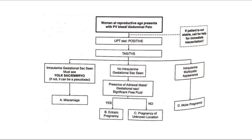If there is an intrauterine gestational sac, we need to rule out the different types of miscarriage. If there is no intrauterine gestational sac seen, look for adnexal mass or significant free fluid — if present, think of ectopic pregnancy; if not, think of pregnancy of unknown location. Another finding is an intrauterine multi-cystic appearance, which should raise the possibility of molar pregnancy.